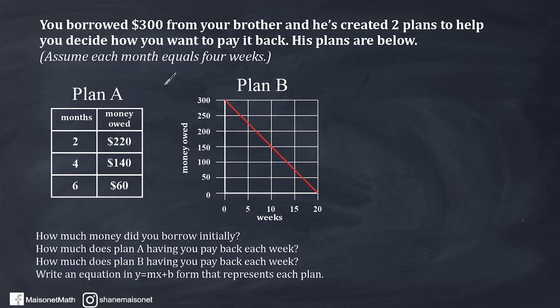So Plan A shows that after two months, you still owe $220. After four months, you owe $140, and after six months, you owe $60. So it looks like over the course of months that the money you owe is less and less. So that means you must have started out with a certain amount of money, but it doesn't say in this table right here.